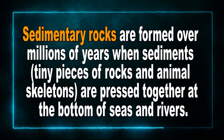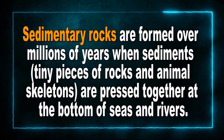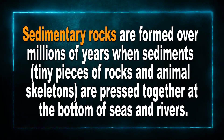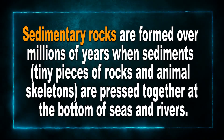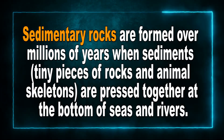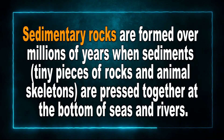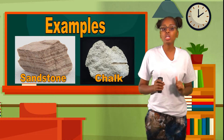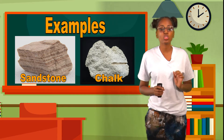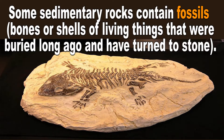Now let's move on to sedimentary rocks. Sedimentary rocks are formed over millions of years when sediments — which are tiny pieces of rocks and animal skeletons — are pressed together at the bottom of seas and rivers. Examples include sandstone and chalk. Some sedimentary rocks contain fossils. Fossils are bones or shells of living things that were buried long ago and have turned into stone.